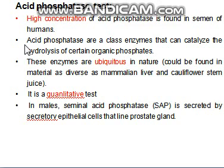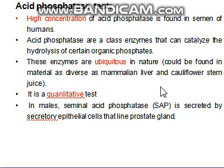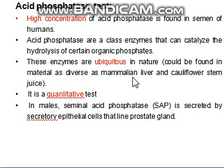Regarding the properties of acid phosphatase: it is generally found in high concentration in human semen, although it is ubiquitous in nature — found in other body fluids and in substances like mammalian liver or cauliflower stem juice. This means it may give a false positive test. It is a qualitative test, meaning you can determine whether a given stain may contain semen, but you cannot determine the quantity.